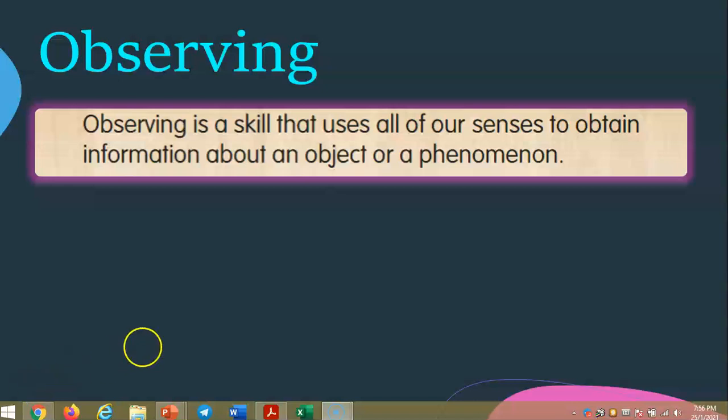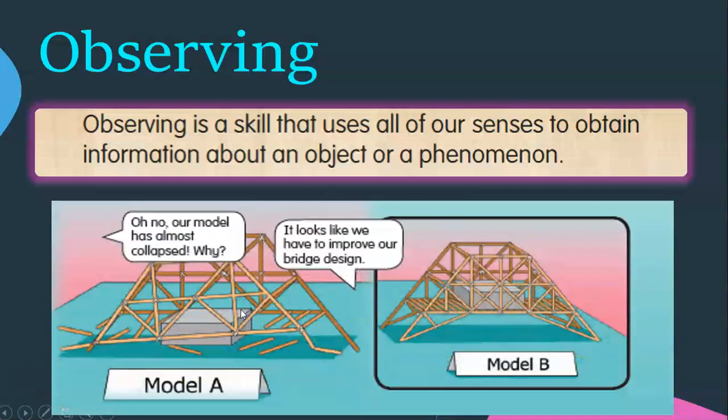So let's look at the example given in your textbook. You are given two models here, bridge models - Model A and Model B. Okay class, how will you determine which is stronger? Yes, the bridge that takes more time to collapse is stronger. So Model B is stronger than Model A.